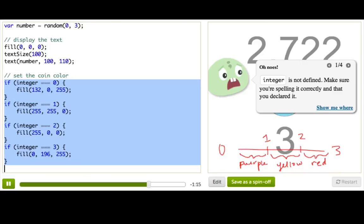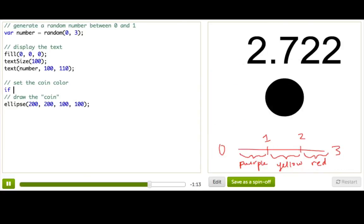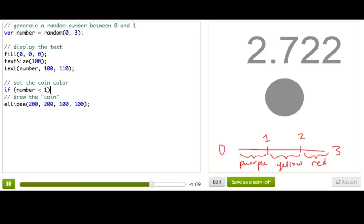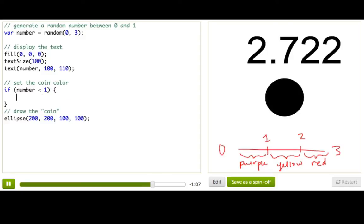Great, so let's see how we can do that with if and else ifs. So I can start out by saying if number is less than 1. So if it's less than 1, and I know it's between 0 and 3, then it must be in this range. Then I'll set the fill color to be purple.